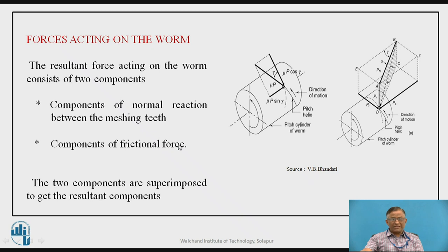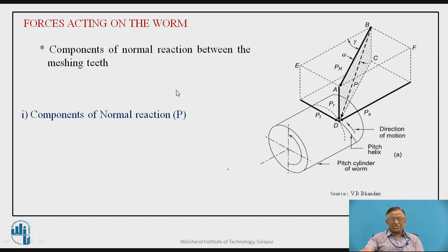Because frictional forces are predominant in worm gears, unlike other gears where rolling motion makes friction negligible, we must consider two components: the component due to normal reaction P, resolved into PR, PT, and PA, and the frictional force (μP) acting perpendicular to that plane, further resolved into two components.